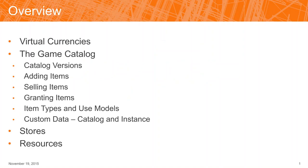So today I'm going to talk about virtual currency, since that's the foundation of your online economy. Then I'm going to dive into the game catalog itself — how you set it up, what the catalog version is for, how to add items, sell them, grant them to players. We'll go through the different item types and usage models, and we'll talk about custom data on inventory items at both the catalog level and the inventory item instance level. Then we'll talk about stores, and finally there are some resources at the end.